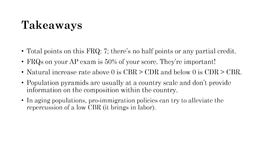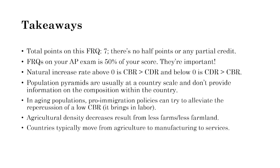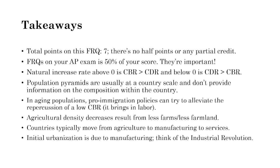In aging populations, pro-immigration policies can alleviate the repercussions of a low crude birth rate by bringing in labor to take over jobs. Agriculture densities decrease with fewer farms and less farmland. Countries typically move from agriculture to manufacturing to services as they develop — initial urbanization is driven by manufacturing, as seen in the Industrial Revolution in the UK, US, Germany, and China, which created the first major cities as economic hubs. Later in development, the focus shifts to retail and other services.